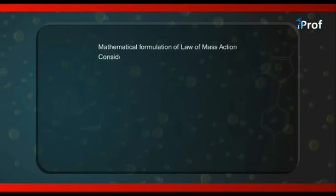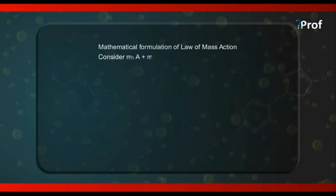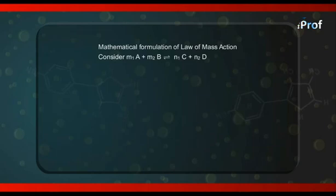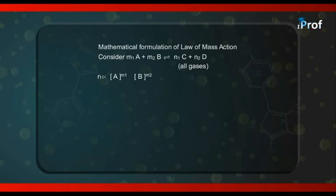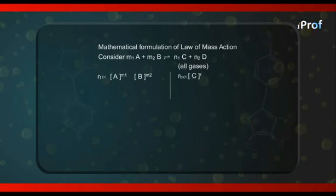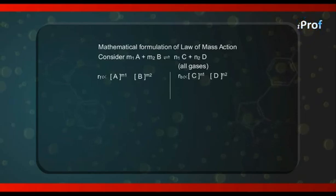Now for the mathematical formulation of the Law of Mass Action, consider a homogeneous reversible reaction: m₁A + m₂B ⇌ n₁C + n₂D. According to the Law of Mass Action, the rate of the forward reaction is proportional to the product of the active masses of the reactants: Rf ∝ [A]^m₁ × [B]^m₂. Similarly, the rate of the backward reaction is proportional to [C]^n₁ × [D]^n₂.